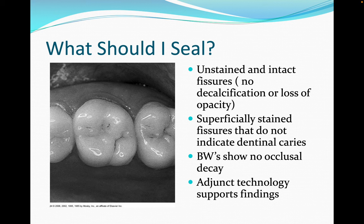Surfaces appropriate to seal include unstained, intact fissures with no decalcification or loss of opacity, and superficially stained fissures that do not indicate dentinal caries. Bitewing radiographs should show no occlusal caries, and adjunctive technology should support clinical findings before proceeding.